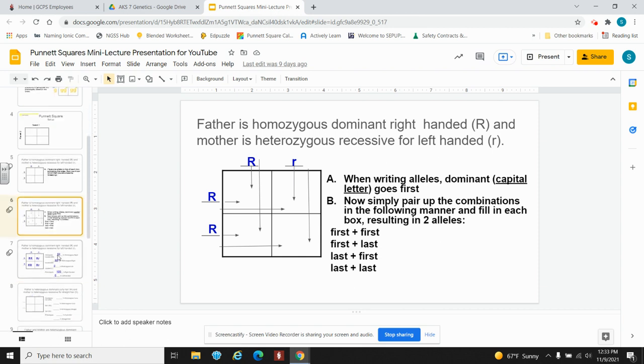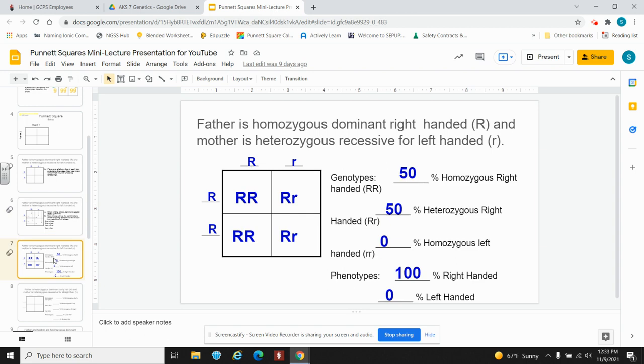Your completed Punnett square should look like this. So what does this mean? Now you can make predictions. The three possible genotypes and two possible phenotypes are listed for a single offspring. So you simply count the boxes to figure out the probabilities.